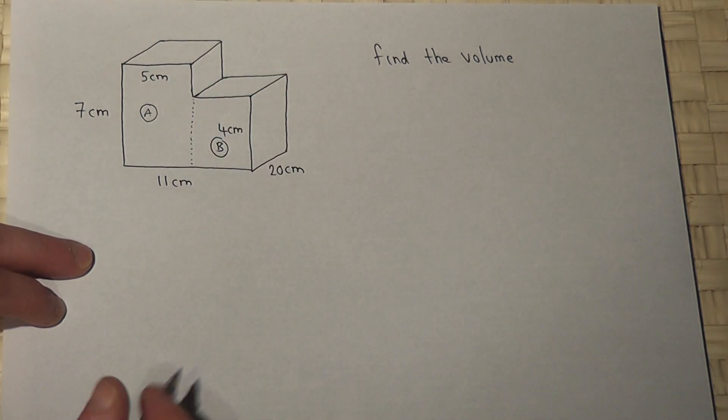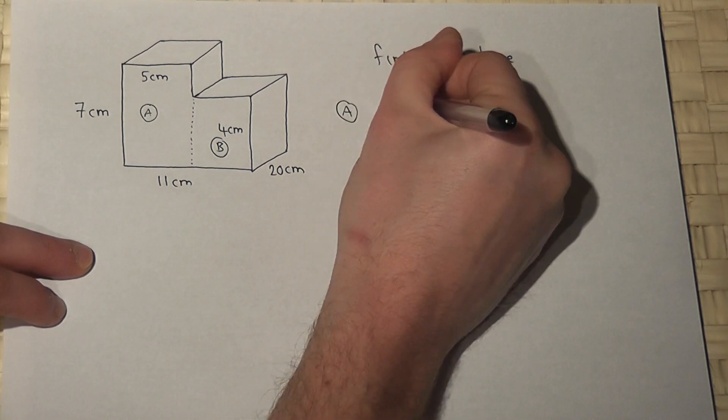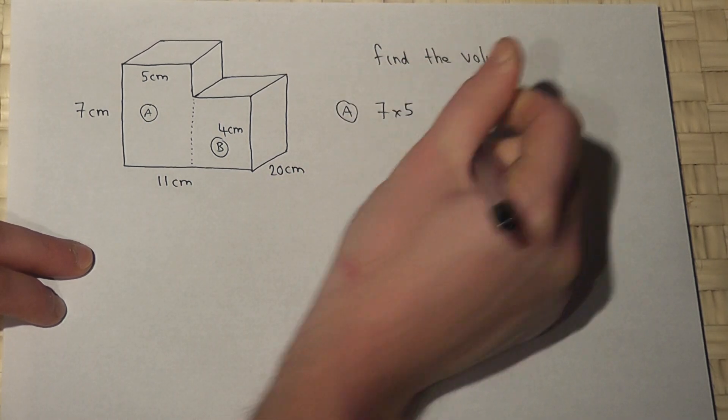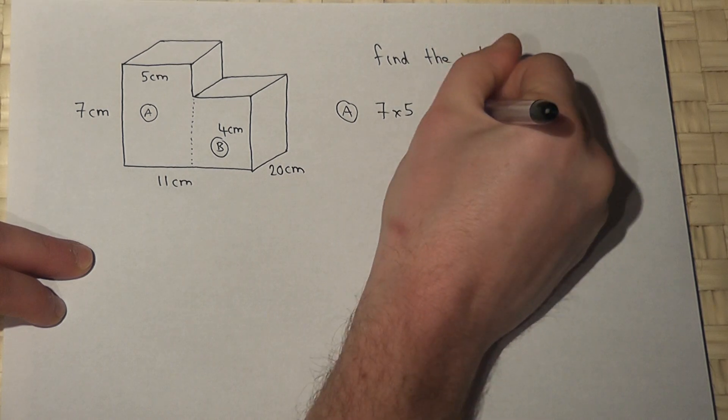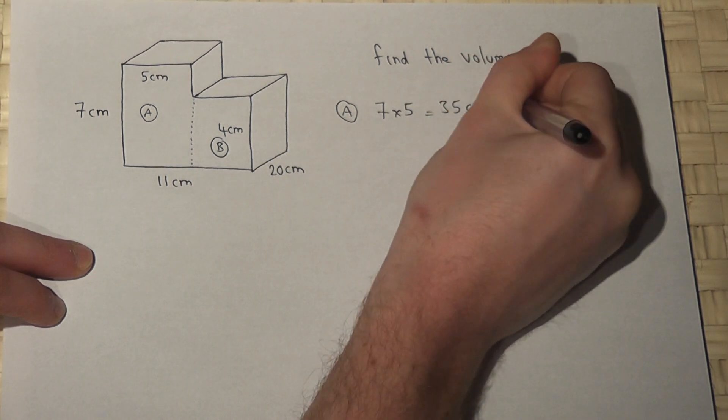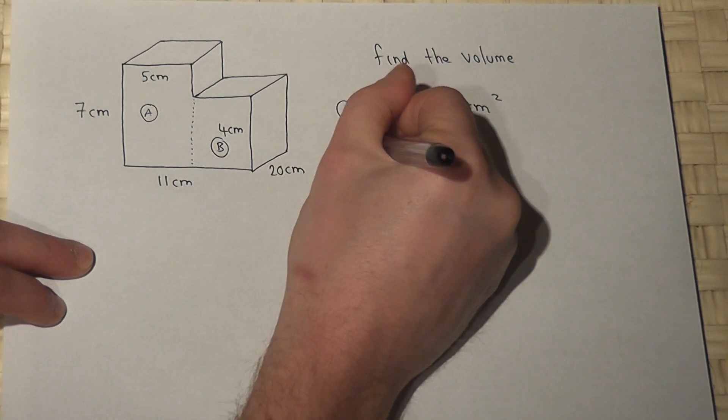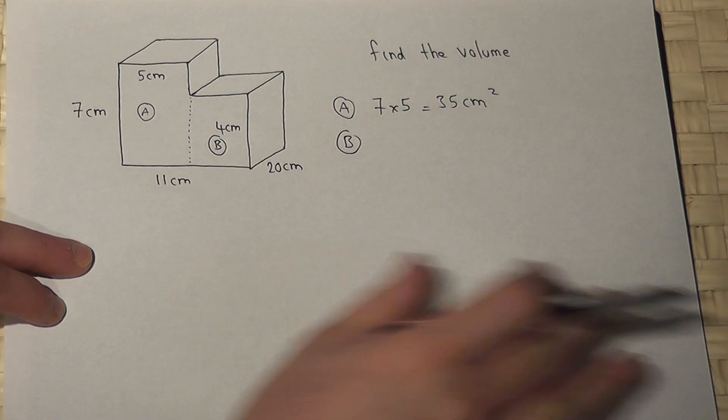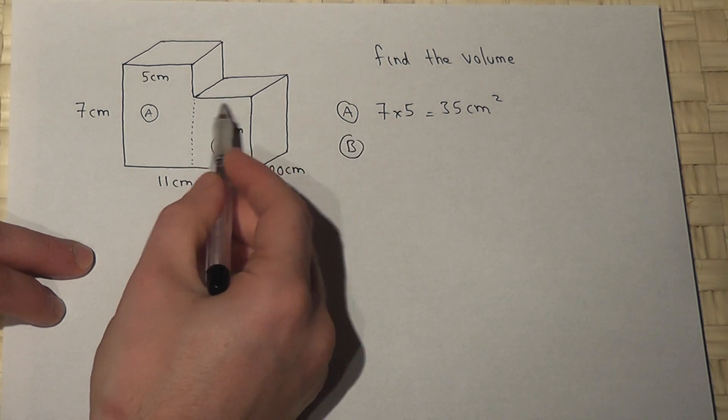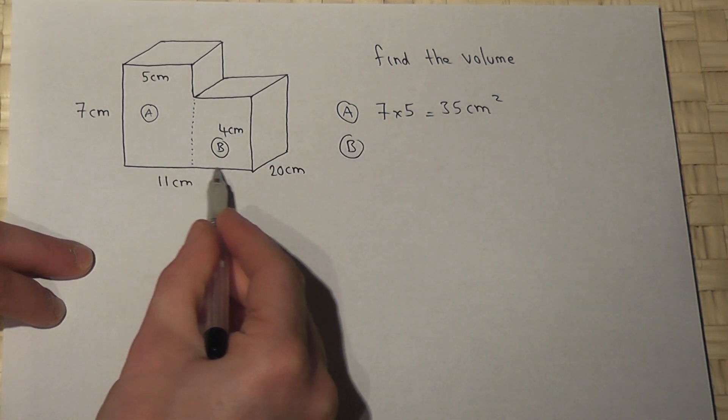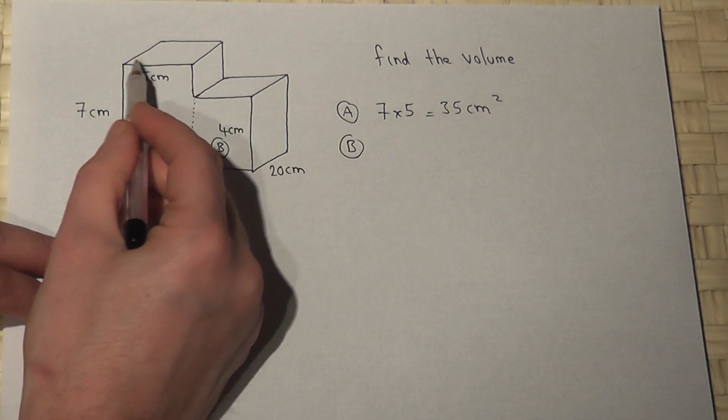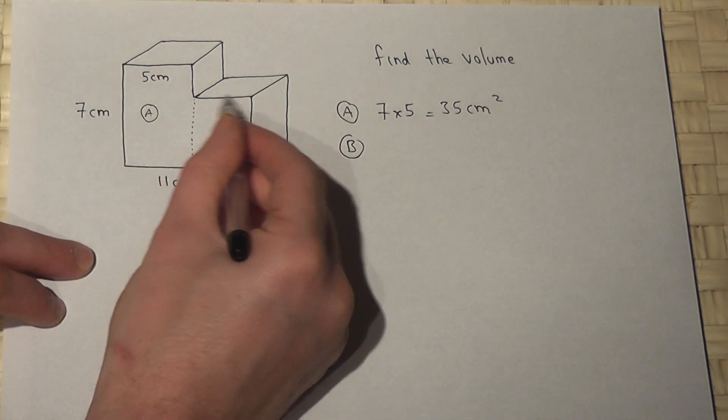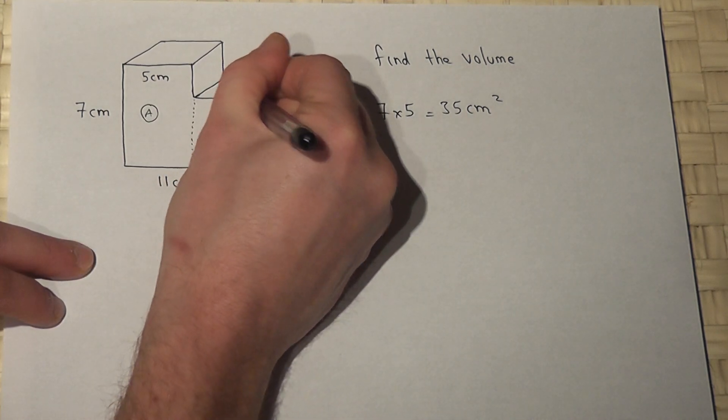Now rectangle A has got an area of 7 times 5, height of 7, width of 5, which is 35 centimeters squared. And rectangle B has got a height of 4, however its width is not known, but because the whole of the width is 11 and that's 5, then this width must be 6 centimeters.